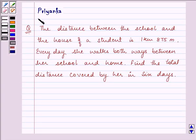Hi and welcome to the session. I am Priyanka and I will be helping you with the following question which says: The distance between the school and the house of a student is 1 kilometer 875 meters.